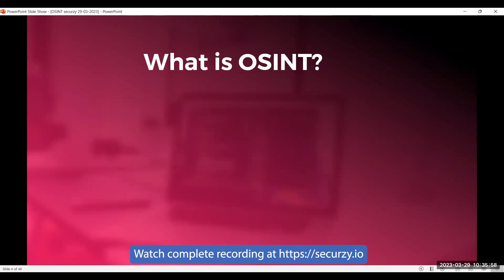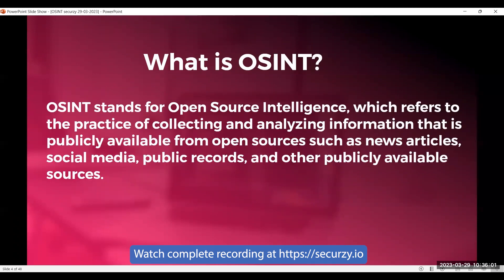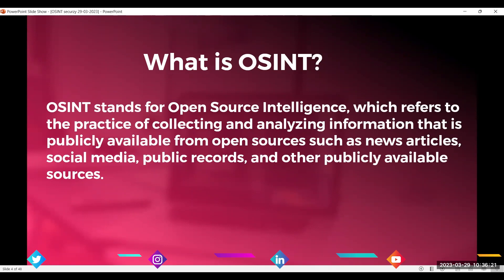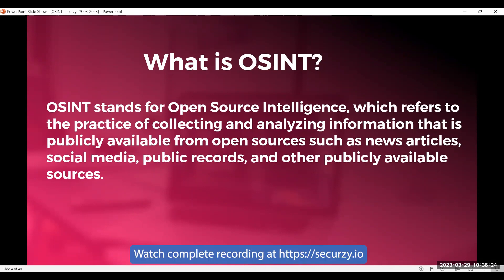OSINT stands for Open Source Intelligence, which is a way of finding and analyzing information that is publicly available. Think of it as detective work using information that is already out there for anyone to see. This can include news articles, social media posts, government records, and other publicly available sources. OSINT helps us make better decisions and understand what's happening in the world.